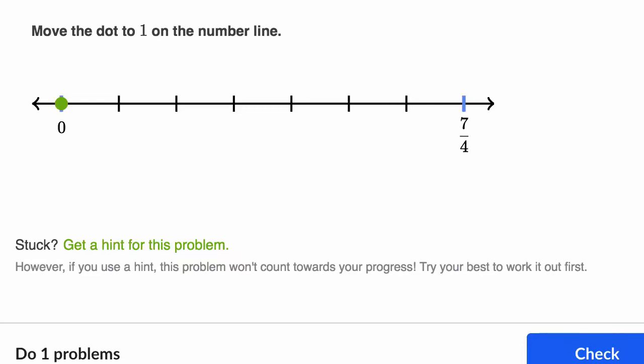I'm here at the Khan Academy exercise called find one on the number line, and they're asking us to do exactly that. It says move the dot to one on the number line. It's a little interactive dot that I could move around. I always encourage you to pause this video and see how you would think about doing it, or put your finger on the screen where you think one is, and then we'll work through it together.